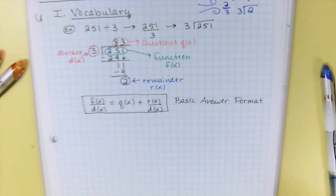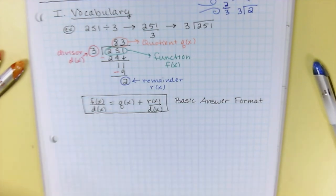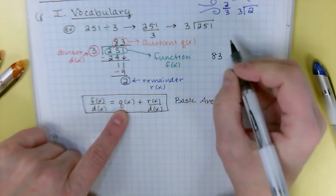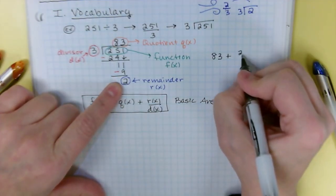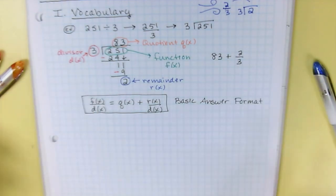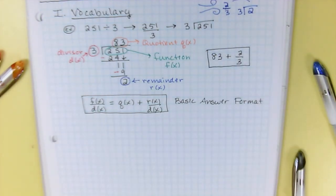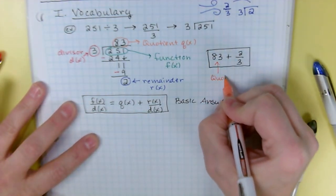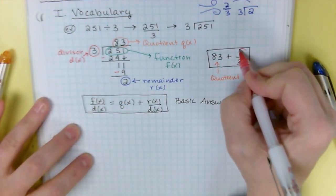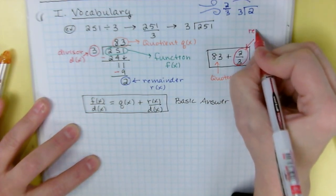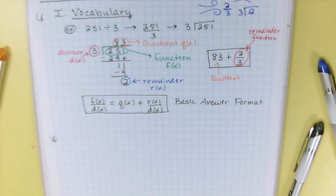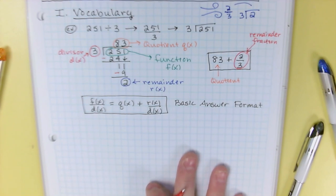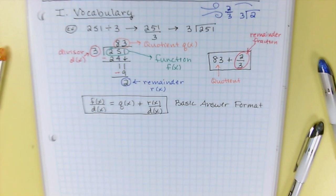This is your basic answer format, and this is what you're going to put all of your answers in on your homework. If there isn't a remainder, it's just going to be q of x. So let's write the answer that we already got in this form. It's the quotient, which is 83, plus the remainder — which was 2 — over the divisor, which is 3. And that would be your answer in this format. The first number is the quotient, and the entire fraction with the remainder and the divisor is called the remainder fraction. This is sometimes called polynomial fractional form.